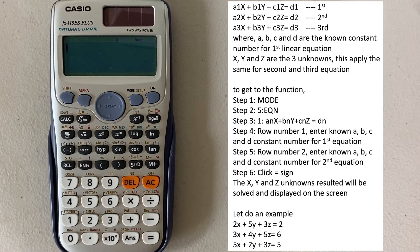The typical linear equations are shown here. We have three equations: A1X plus B1Y plus C1Z equals D1, and this applies for the second and third equations. Here, A, B, C, and D are the known constant numbers that we can enter into the calculator later. XYZ are the three unknowns that we'd like to solve, and this applies the same for the second and third equations.